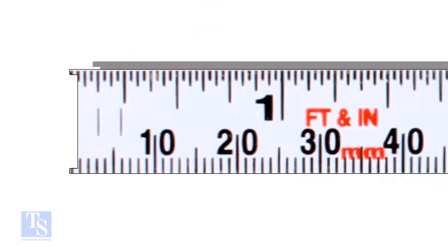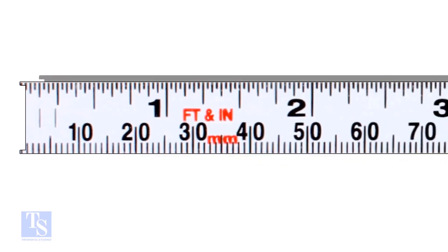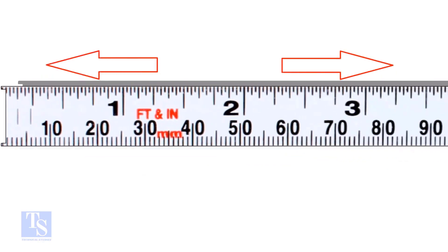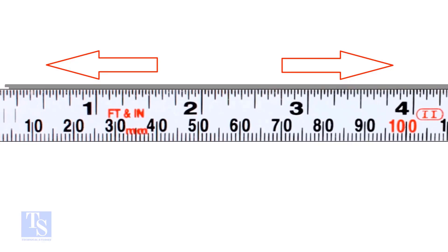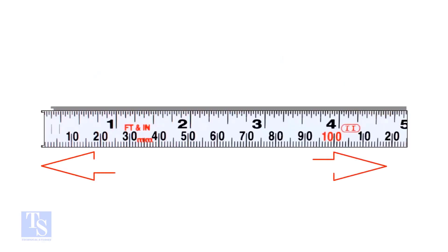Let us go to the subject now. Usually, on a measuring tape, there are two types of units. The imperial unit system: inch and foot. And the metric unit system: millimeter, centimeter, and meter.